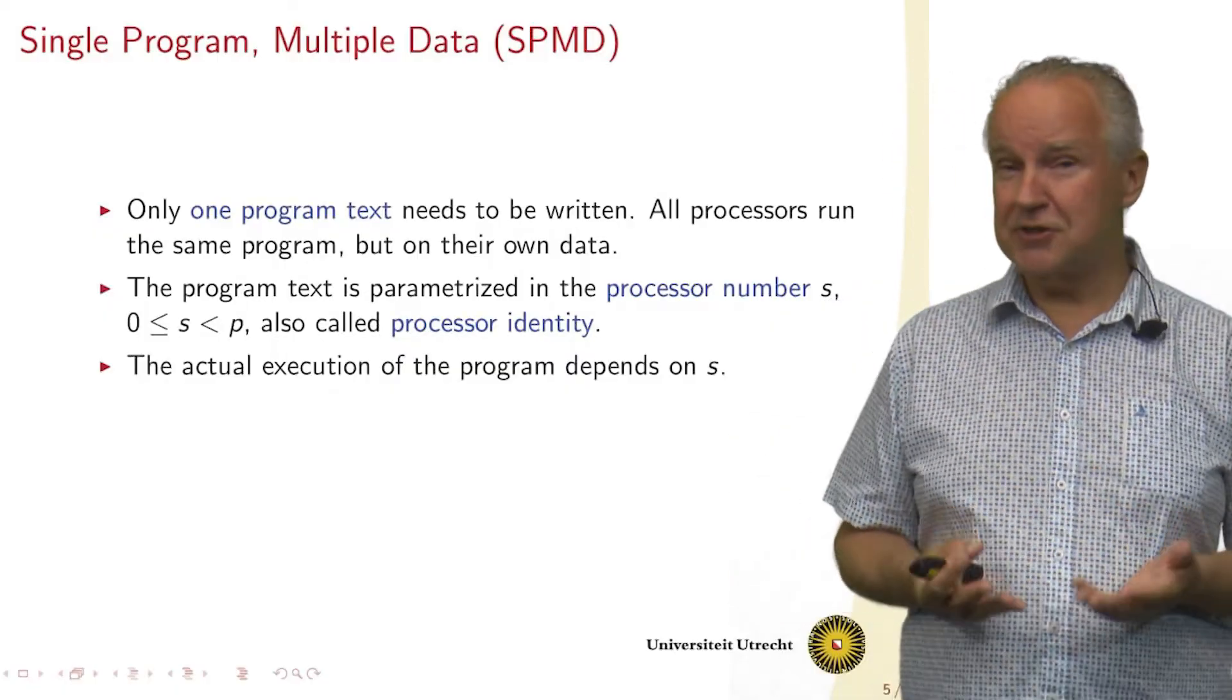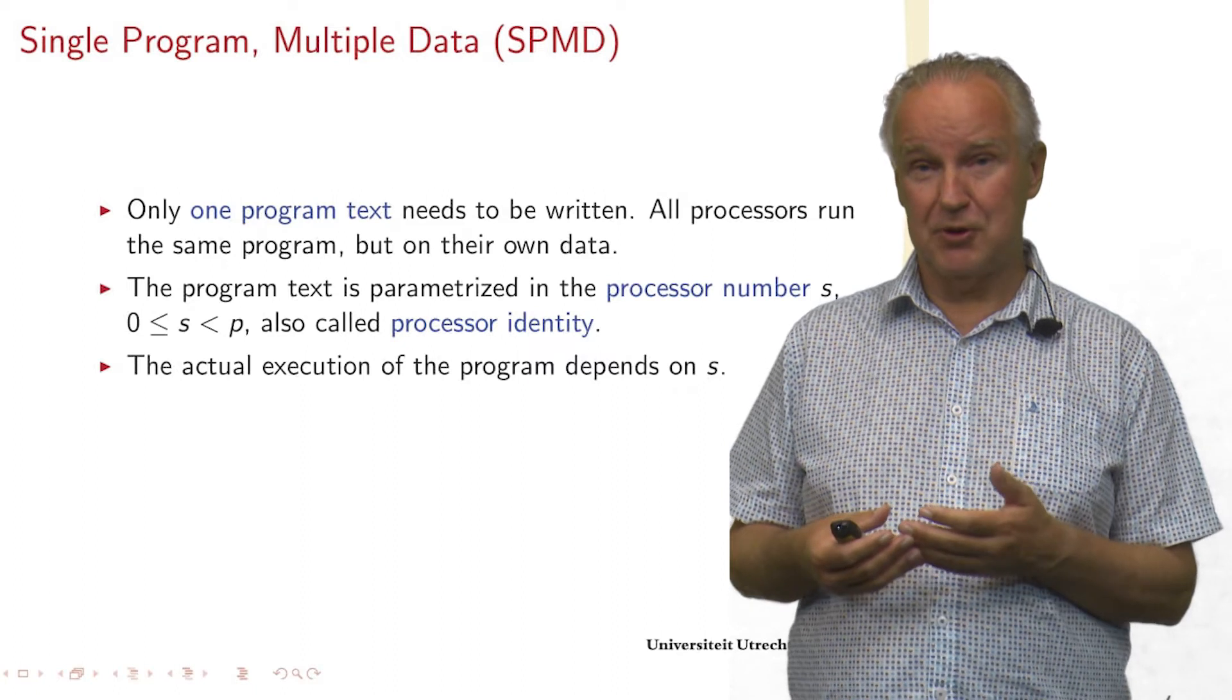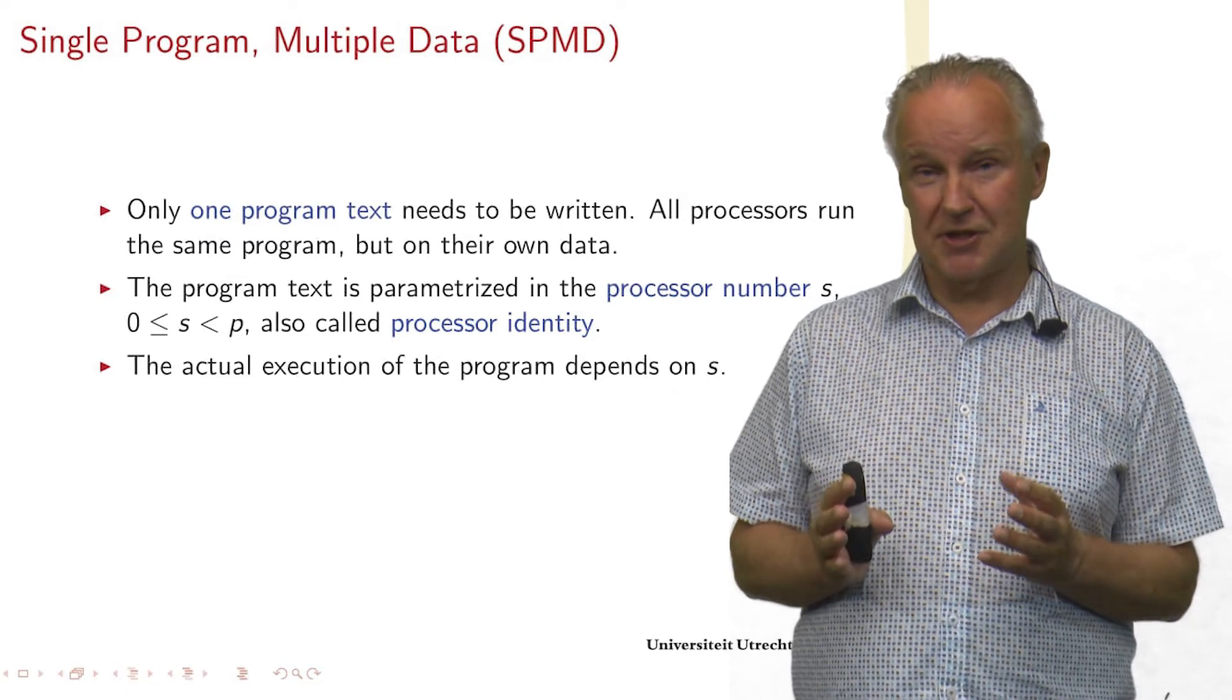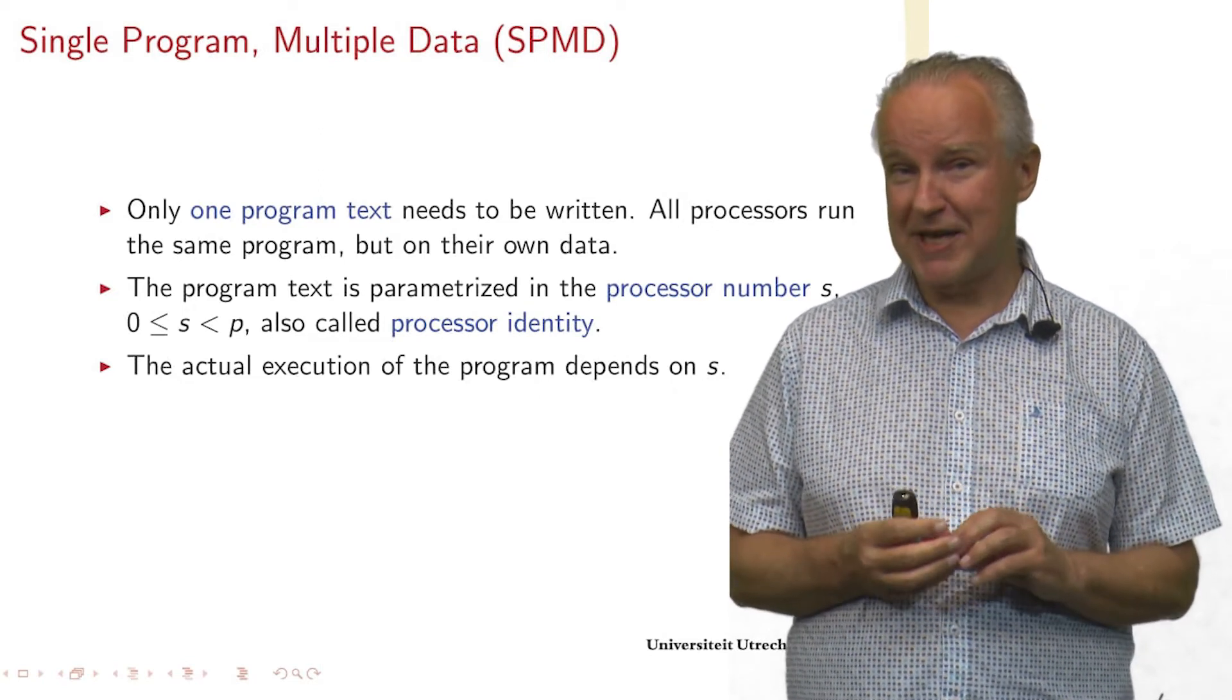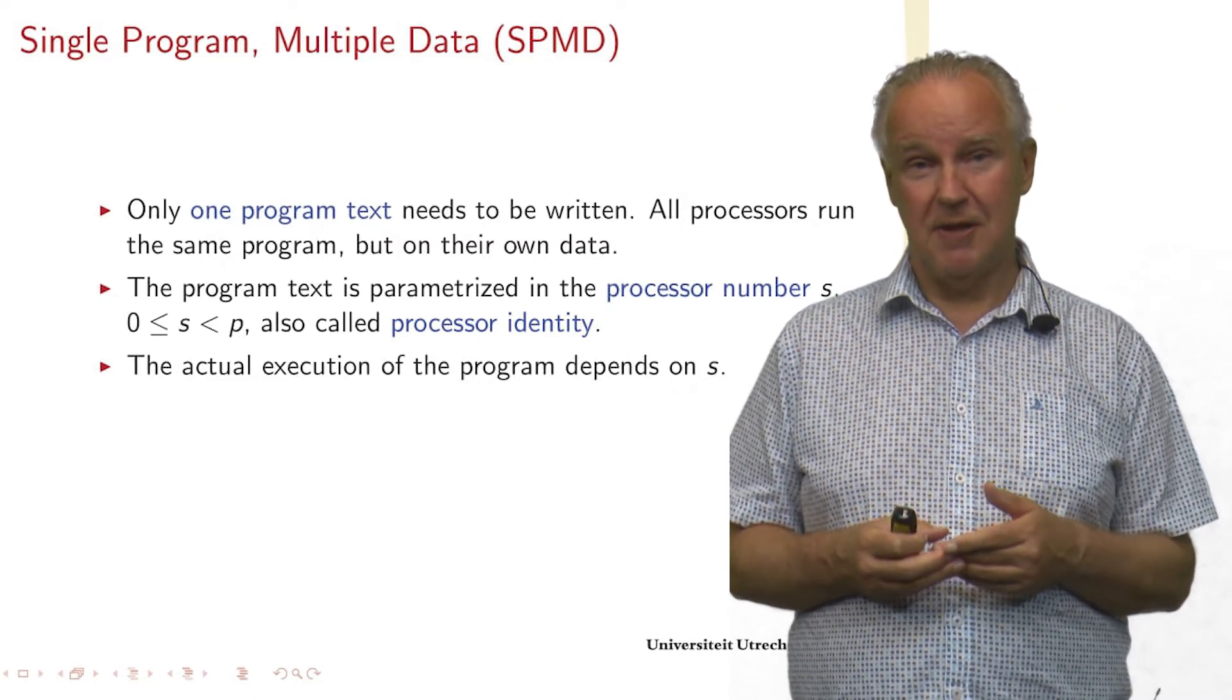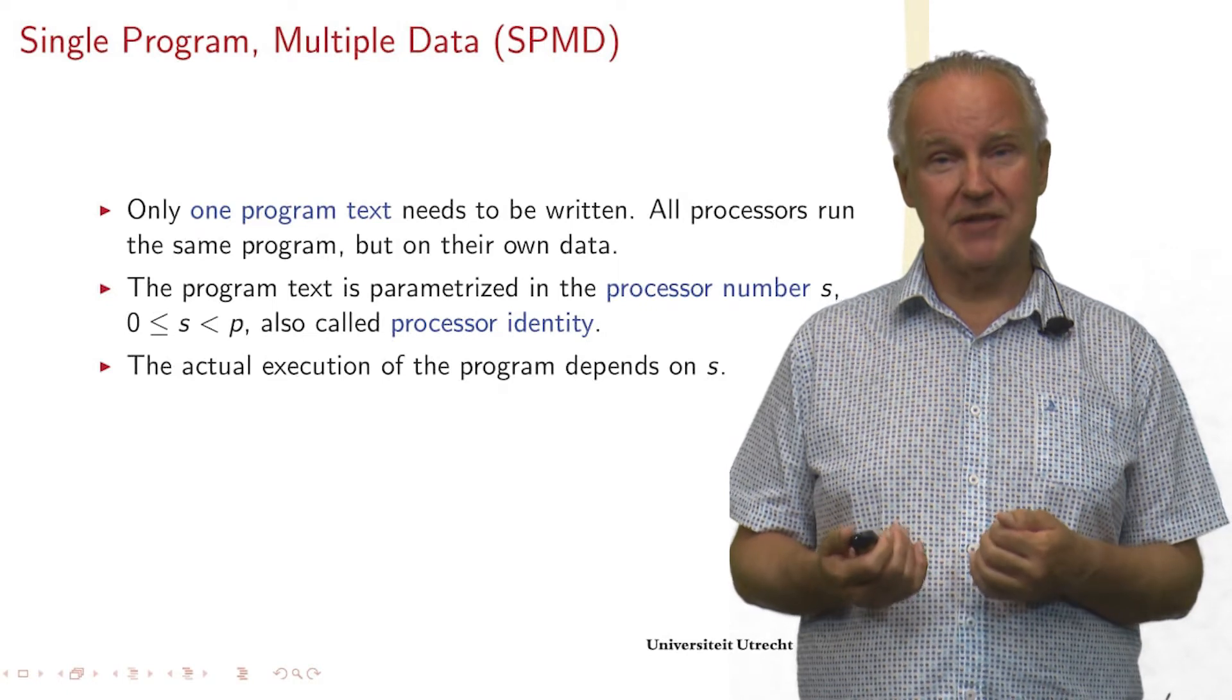So, as we just have seen, the program that we write is in a certain fashion which we call single program multiple data. We just write one program and it depends, the execution depends on the local data. Every processor performs the same program, but on its own data. So, they still do different computations, but we don't have to write different program texts. So, why can we do that? Because the program text is parameterized in the processor number s. So, s is a number between zero and p minus one. It is also called the processor identity. The program execution depends on s.